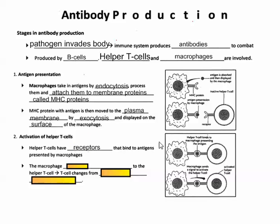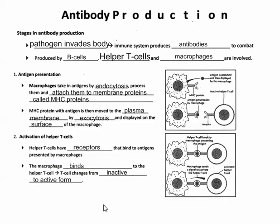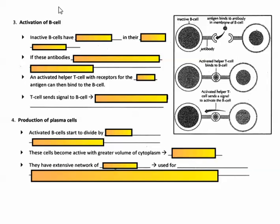Helper T cells have receptors that can bind to those displayed antigens. The helper T cells themselves become activated as a result of a signal being passed from the macrophage to the T cell.